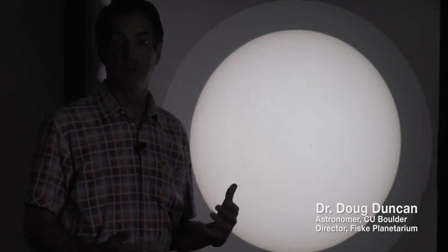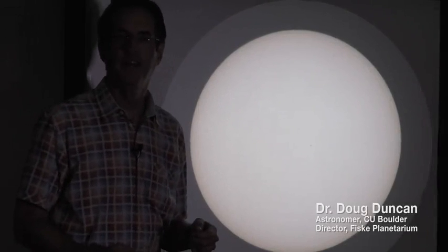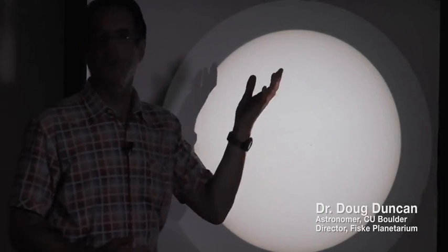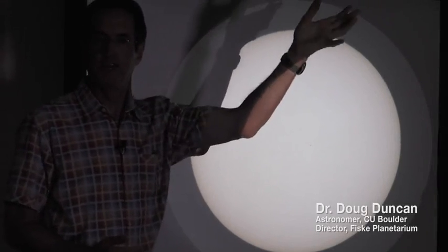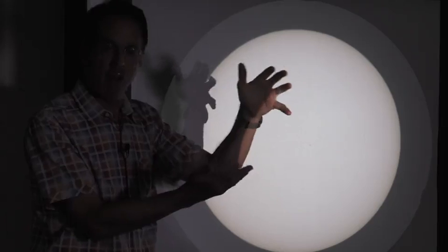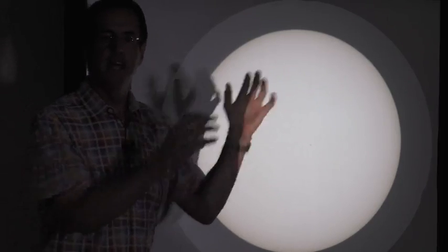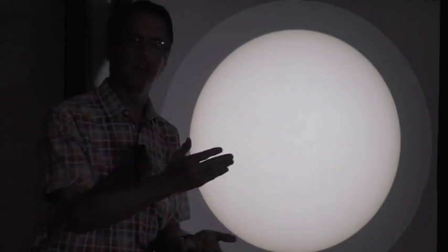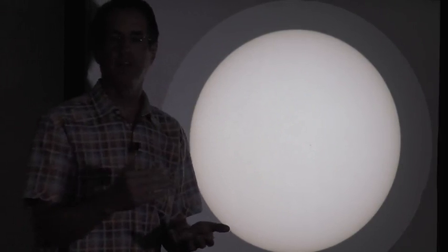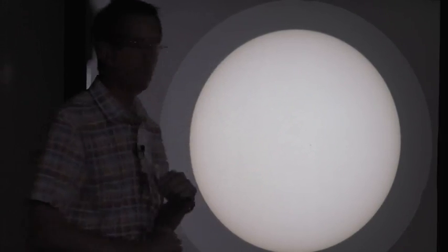We're here at the University of Colorado's Summers Bosch Observatory. The observatory has a beautiful solar telescope. Up on the roof is a special mirror that tracks the sun across the sky and it sends a beam of sunlight through a telescope lens off several other mirrors and makes this nice image of the sun right here.